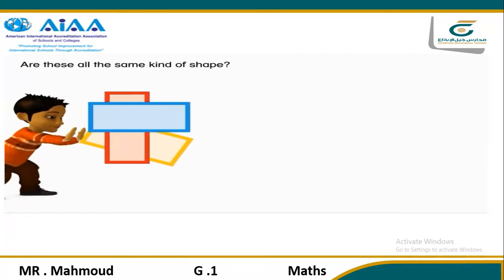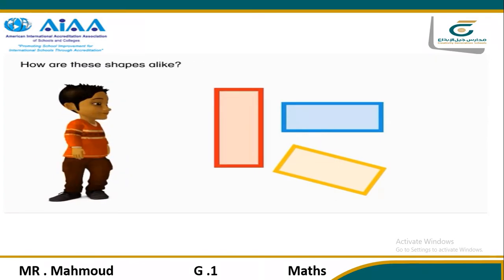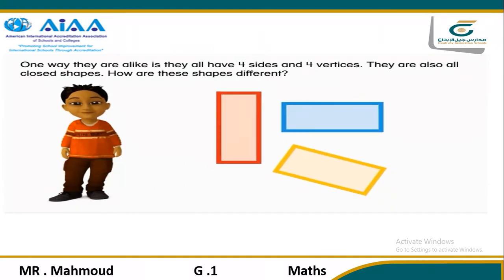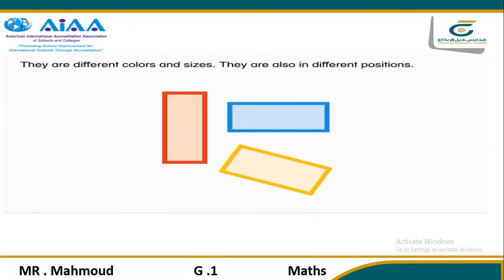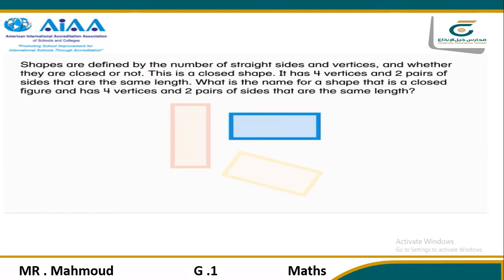Are these all the same kind of shape? Let's find out. How are these shapes alike? One way they are alike is they all have four sides and four vertices. They are also all closed shapes. How are these shapes different? They are different colors and sizes, and they are also in different positions. Shapes are defined by the number of straight sides and vertices and whether they are closed or not. What is the name for a shape that is a closed figure with four vertices and two pairs of sides that are the same length?